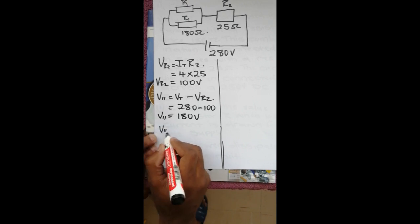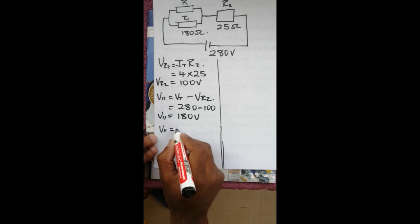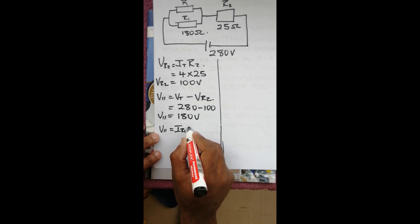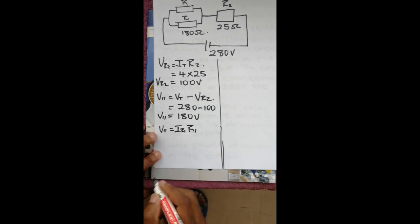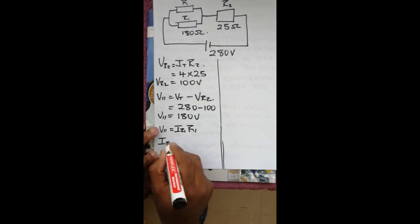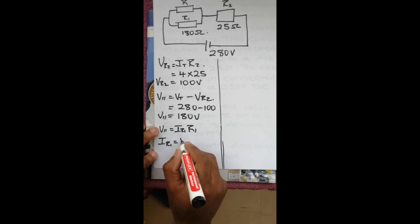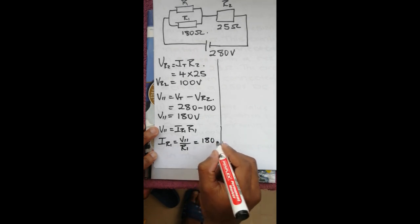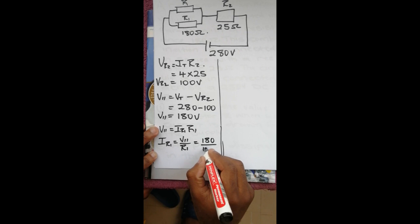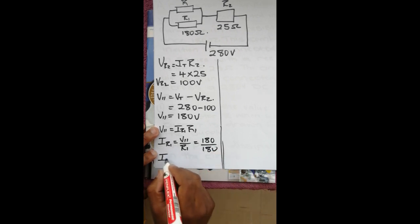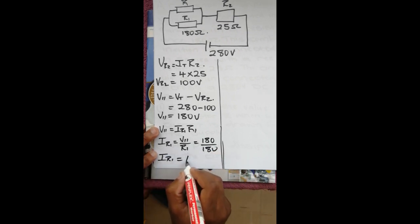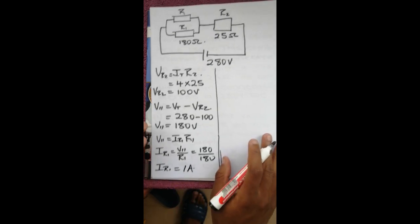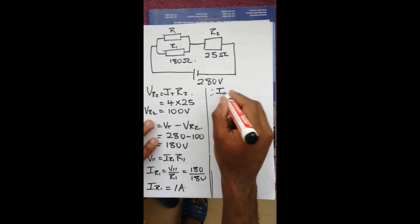From V_parallel, we can say V_parallel equals I_R1 times R1. Therefore, I_R1 equals V_parallel over R1, which is 180 over 180, giving I_R1 equals 1 amp.